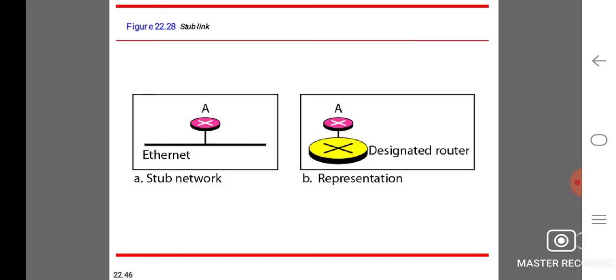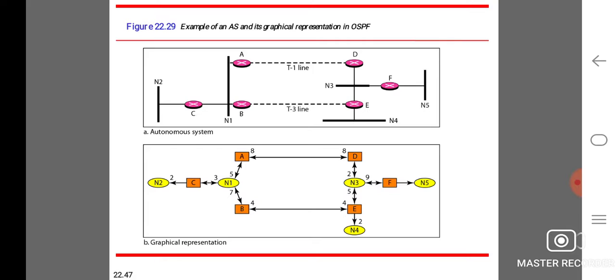Stub link: A is a stub link and B is the representation. Examples of an AS and its graphical representation of OSPF: A represents the autonomous system, B represents the graphical representation.